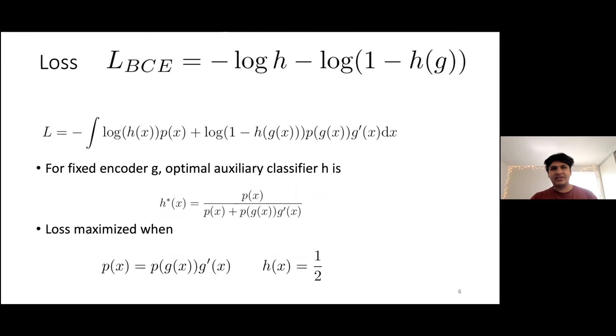The loss we use is a modification of the standard binary cross-entropy loss, where we feed the same data to both terms of the binary cross-entropy. As we can see, the loss is maximized when P of G of X, G prime of X is the same as the original probability density. That is, even after applying the map, the probability density looks the same. And H of X, which is the auxiliary classifier, is one half, so it's maximally confounded, as we said.